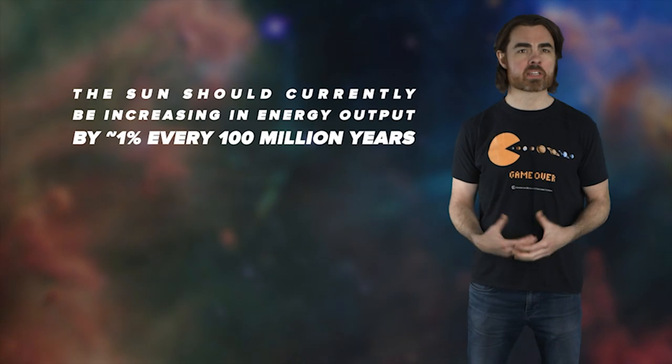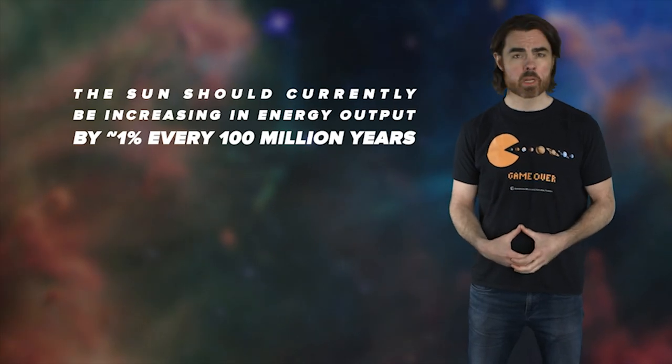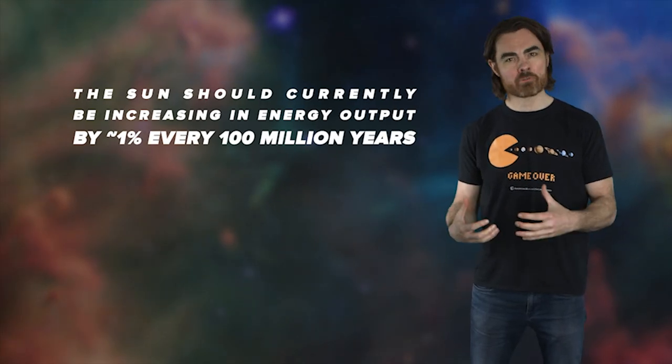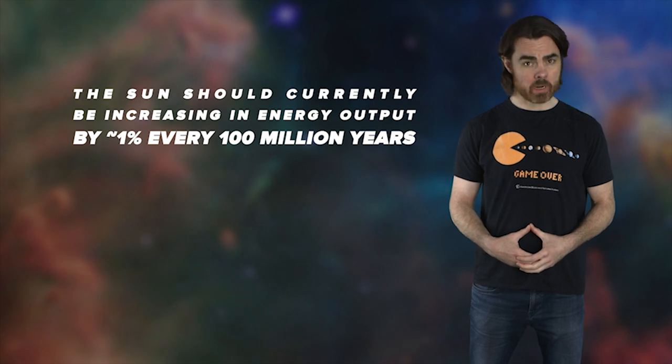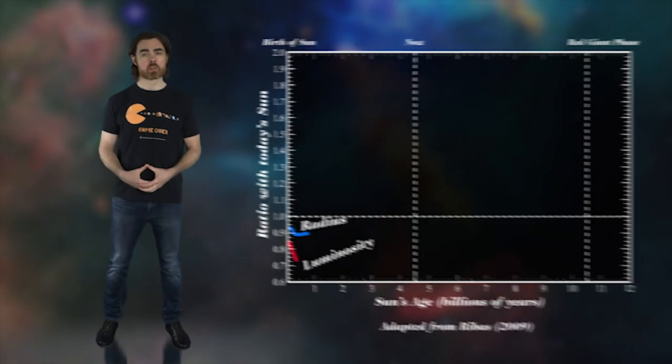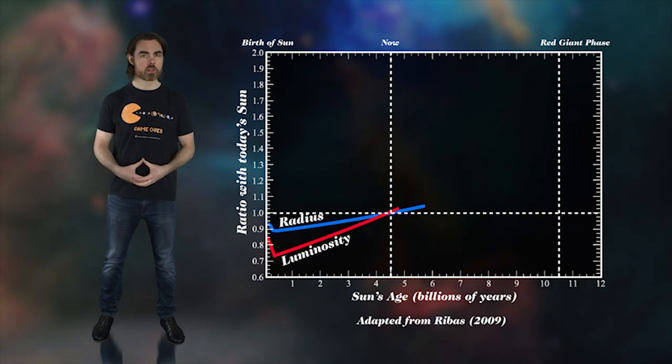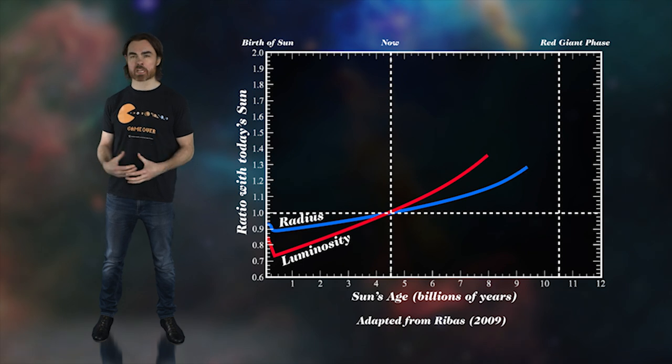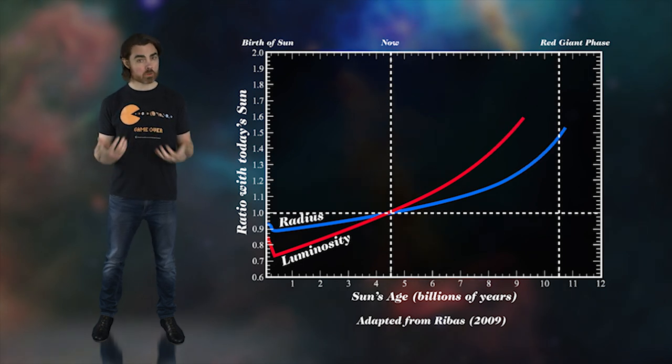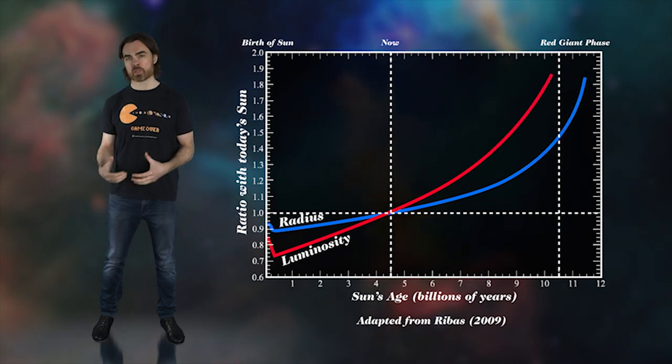It's been calculated that the sun should currently be increasing in energy output by close to 1% every 100 million years. But that rate will increase. Now, that's way too small to have any effect on human timescales. But it's huge on geological timescales. Now, the sun was around 30% dimmer and 10% smaller when it first formed. But it will be about 2 thirds again as bright and a third again as large before it finishes burning its store of hydrogen fuel in around 5 billion years.